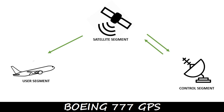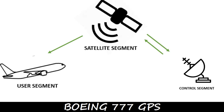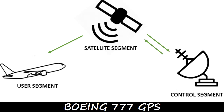The GPS architecture consists of three segments: the user segment, the satellite segment, and the control segment. Let's first understand the basics of the user segment.